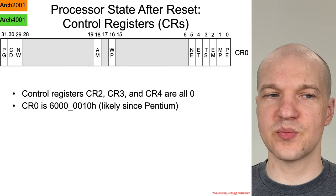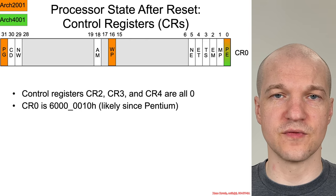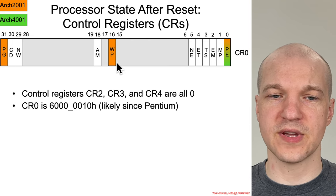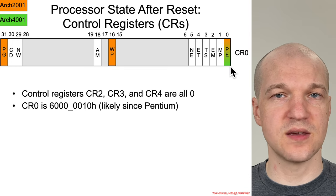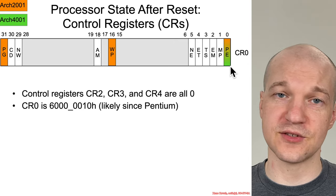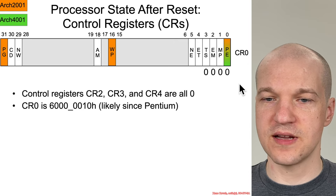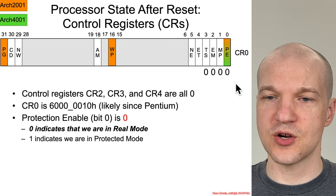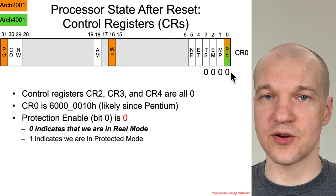CR0 has some particular fixed value that it's likely been set to for quite a while. Here are the bits that we have seen in architecture 2001, and the PE bit in particular we said was going to be the one we would see in 2001 and 4001. The initial state here is zero, zero, zero, and that zero right there is the protection enable bit.